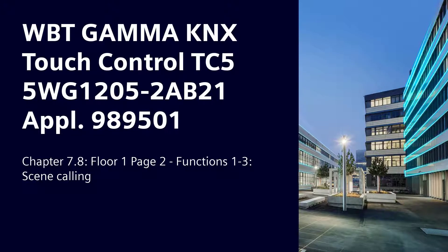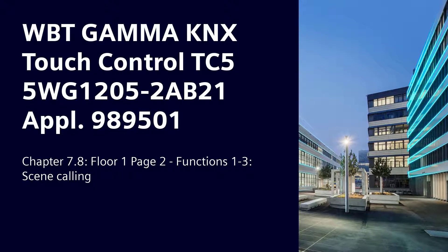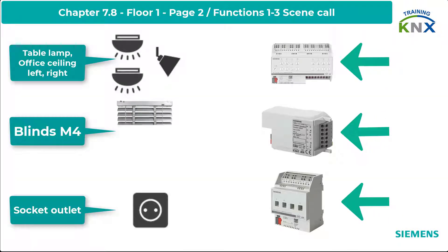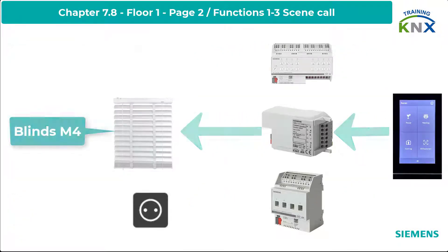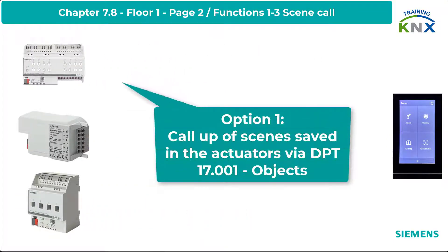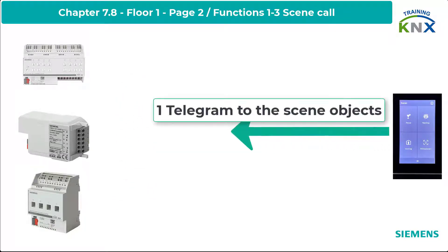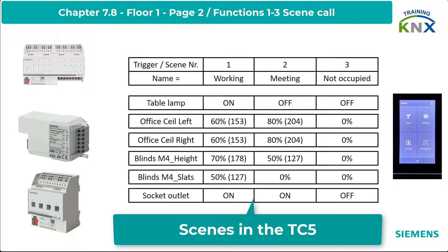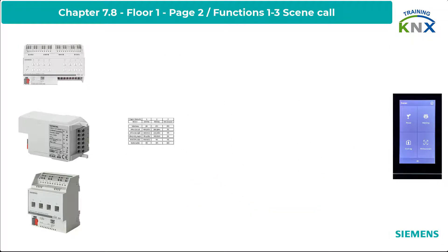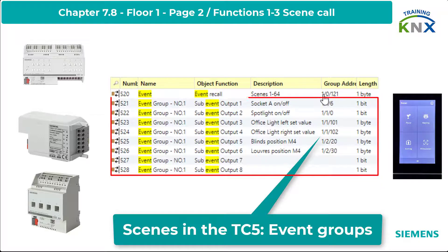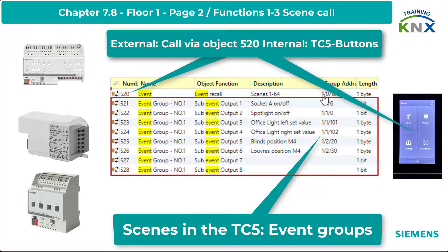Chapter 7.8: Siemens Gamma KNX Touch Control TC5 Scene Control. The TC5 allows all types of scene retrieval. Scenes stored in actuators can be called up from the multifunction pages via DPT 17.000001, 8-bit scene, but also scenes can be created in the TC5. In this application program they are called event groups. The retrieval of these event groups is done via Object 520 Event Recall. See also Chapter 5 of this web-based training.